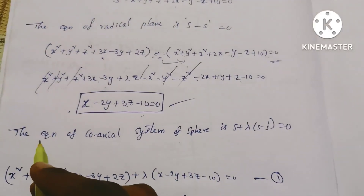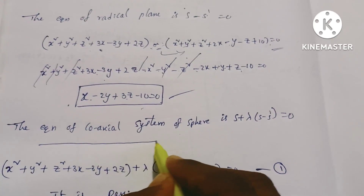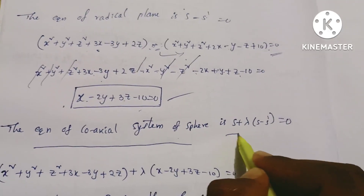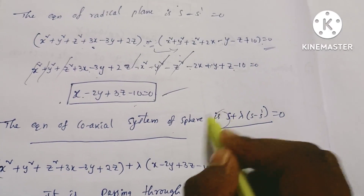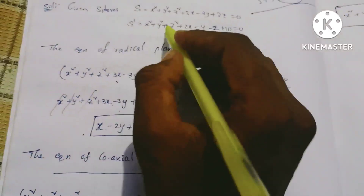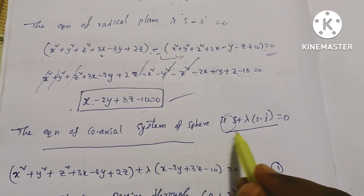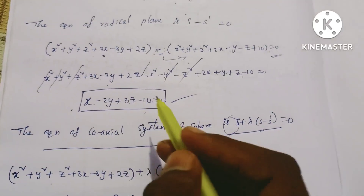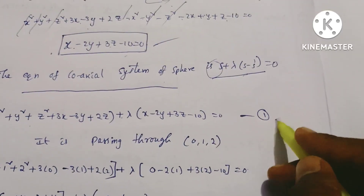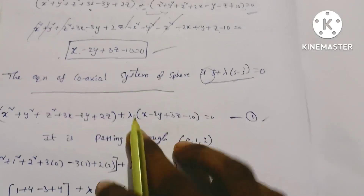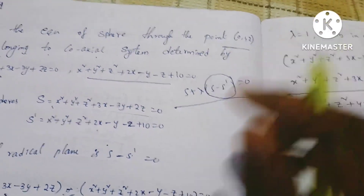Now let's set up the coaxial system. The equation of the coaxial system of spheres is S plus lambda into (S minus S dash) equals 0, where S equals 0 gives the first sphere equation. We apply this equation and compare with the given point.